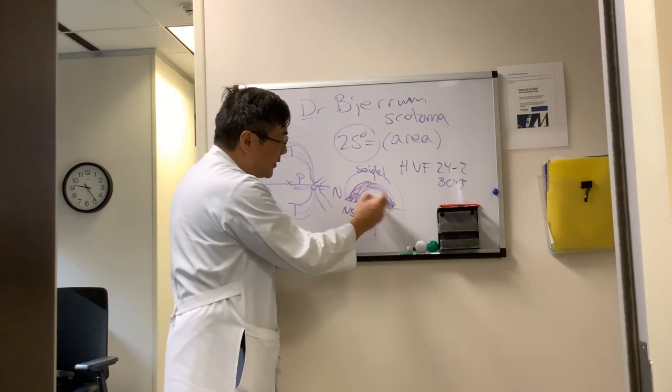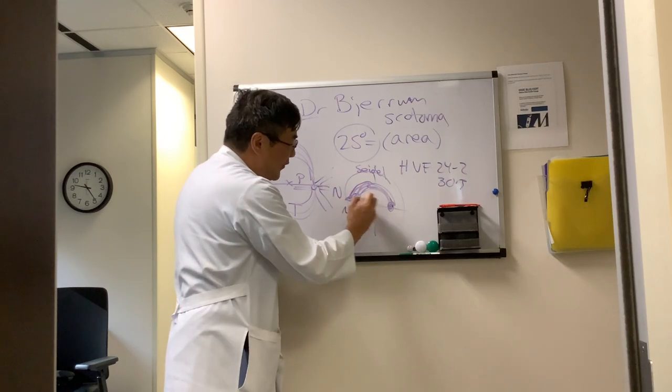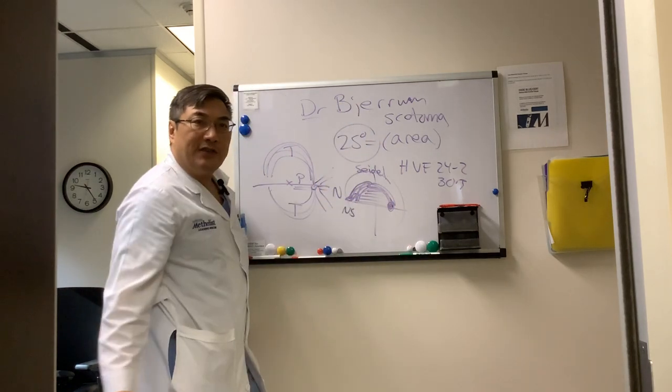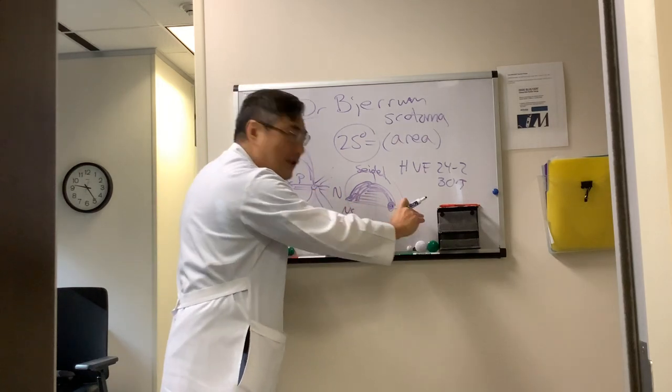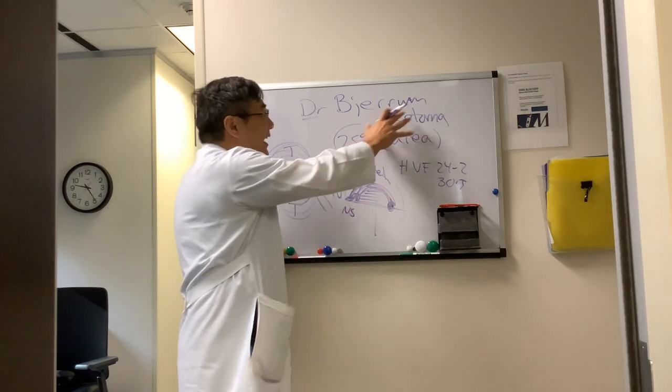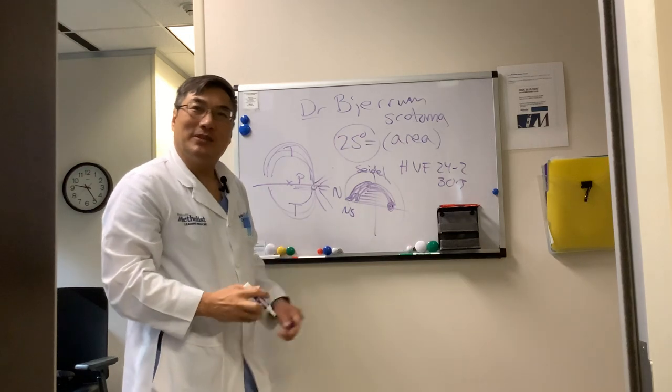So arcuate, nasal step, and if dense enough, altitudinal field defects are all horizontal respecting nerve fiber layer defects that have an eponym - the Bjerrum scotoma.